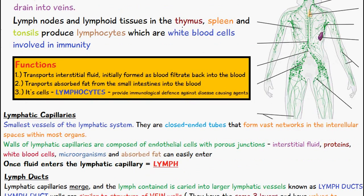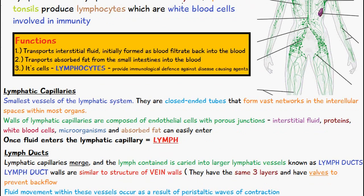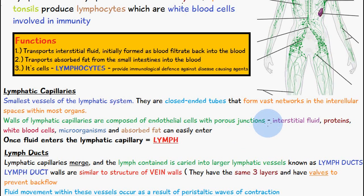Now let's talk about the vessels. Lymphatic capillaries are the smallest vessels of the lymphatic system. They are closed-ended tubes that form vast networks in the intercellular spaces within most organs. The walls of lymphatic capillaries are composed of endothelial cells with porous junctions, meaning they have small gaps inside. Interstitial fluid, proteins, white blood cells, microorganisms and absorbed fat can easily enter into these lymphatic capillaries. Once fluid enters the lymphatic capillary it's now known as lymph.